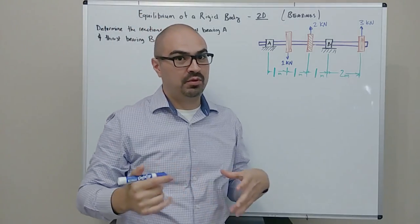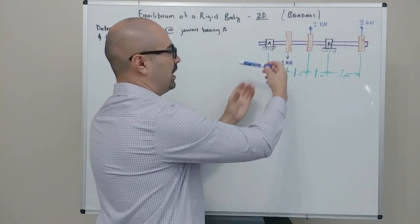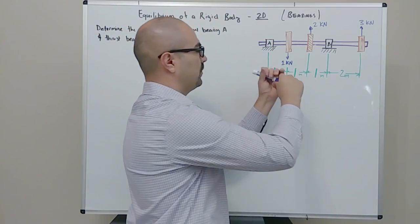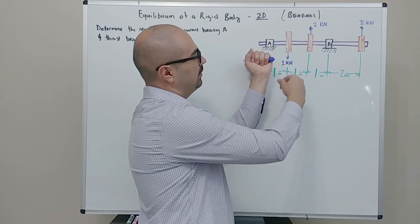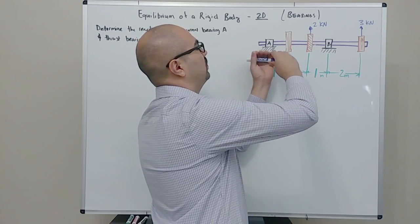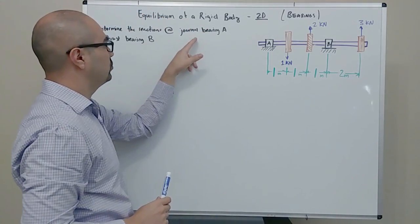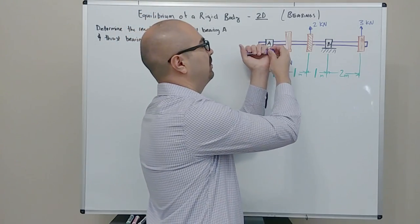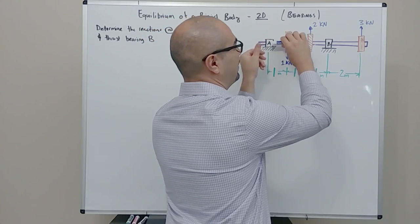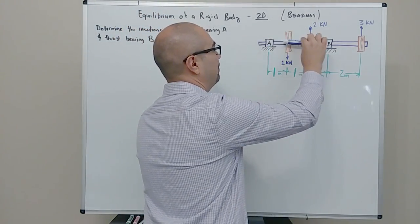If you remember from statics, there's a difference between a journal and a thrust bearing. Both bearings are going to allow the shaft to rotate freely — they're not restricting the rotational motion — but the bearing encases the shaft. What the bearings are not going to allow is moving the shaft up and down. Depending on the type of bearing, one of them is going to keep the shaft from sliding through the bearing, because the last thing we want is the shaft rotating and sliding off. So there's only one type of bearing that prevents a shaft from sliding.